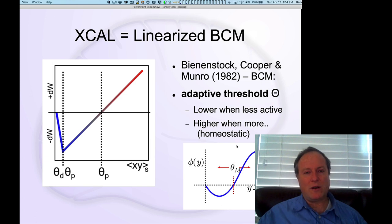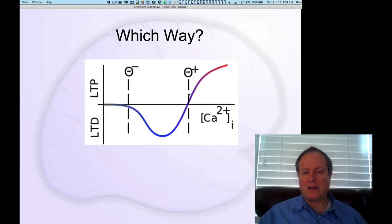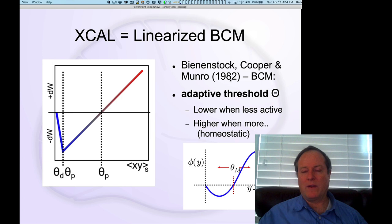So in the Bienenstock and Cooper and Munro model they introduced an adaptive threshold. So here we talked about a threshold that gets you from this depression regime to the potentiation regime. And the key idea from Bienenstock and Cooper and Munro was to make this threshold something that moves over time. And this in fact can be controlled in a homeostatic way which is to say that if the neuron is getting too much activity you increase the threshold making it harder to increase those synapses further. And likewise if it's getting not enough activity you can lower the threshold. And so this notion of an adaptive threshold on a curve like this turned out to be computationally quite useful.